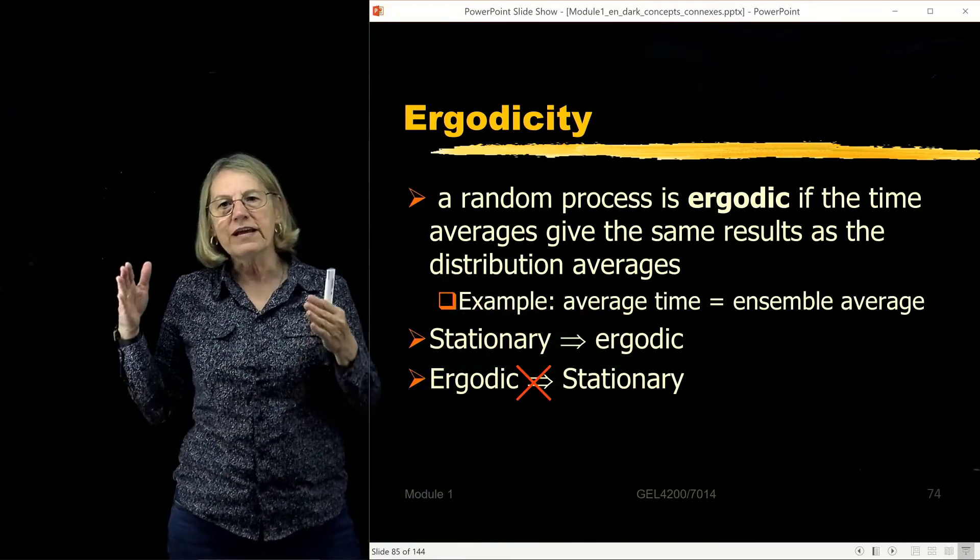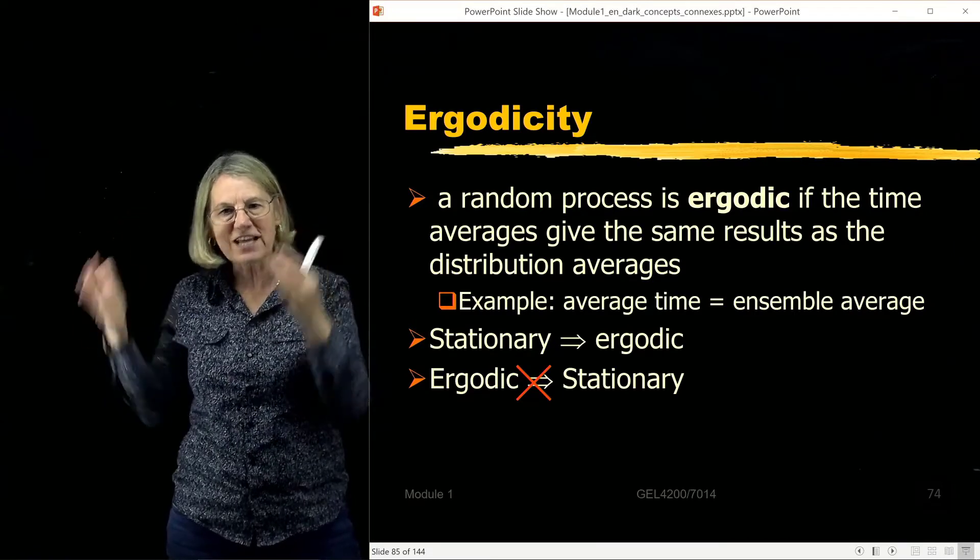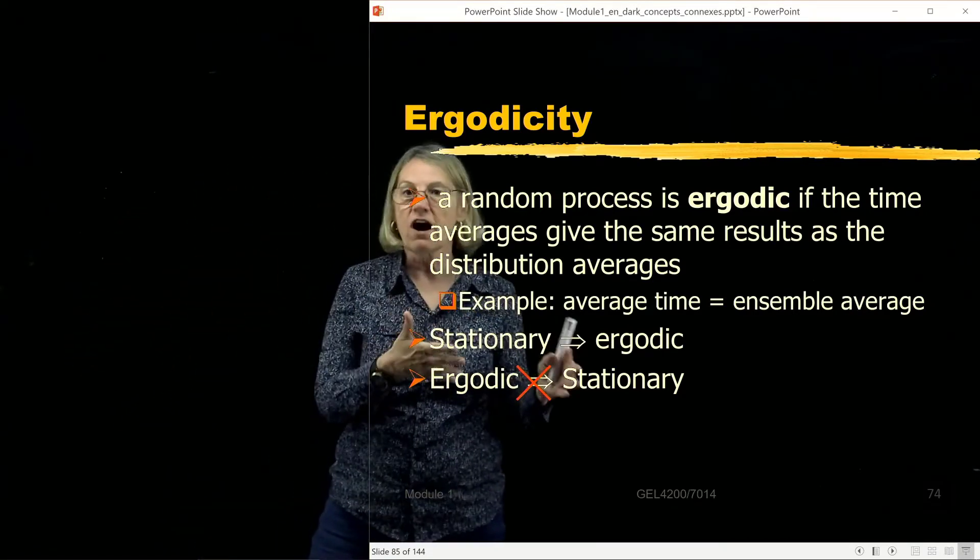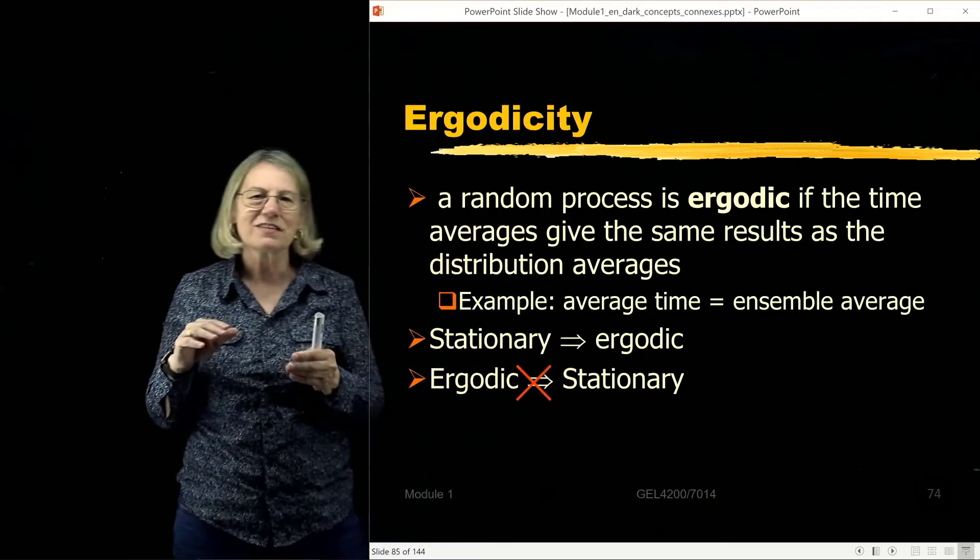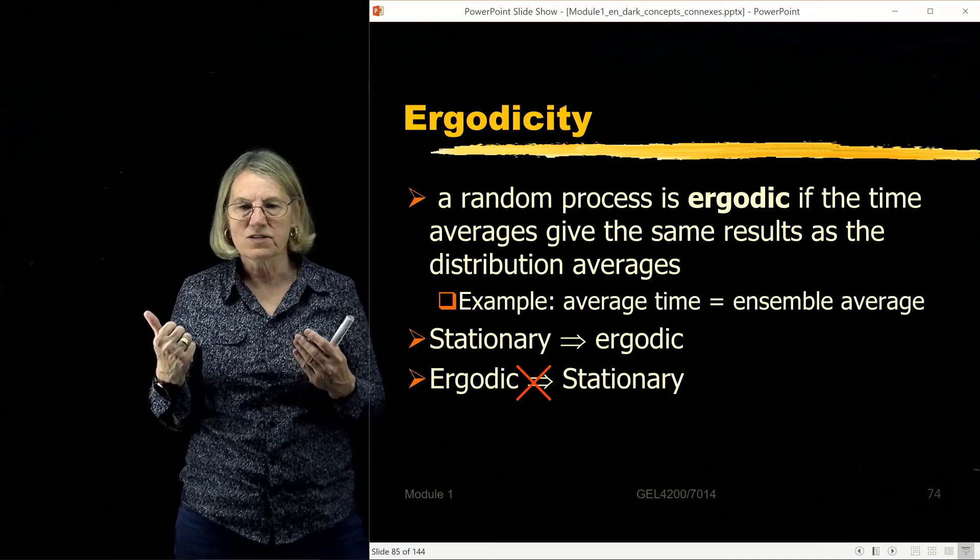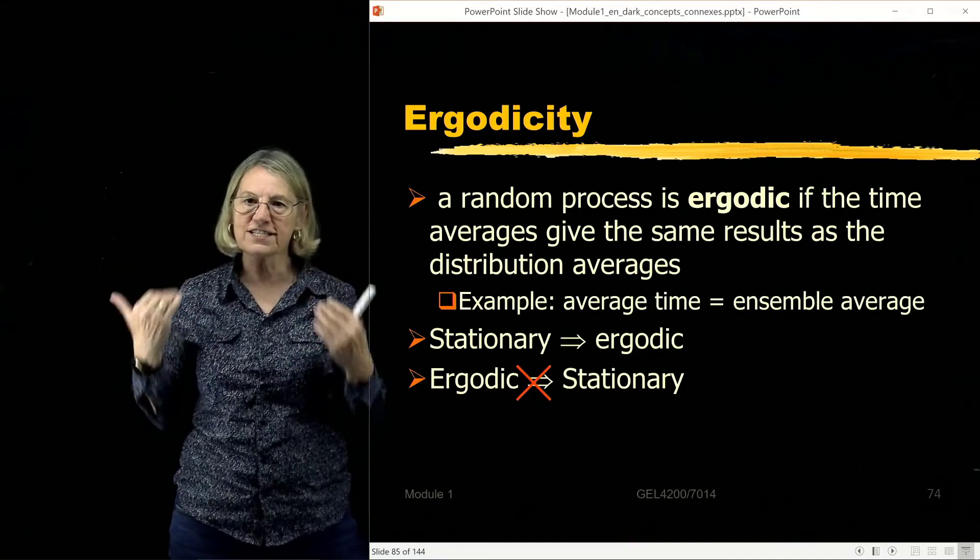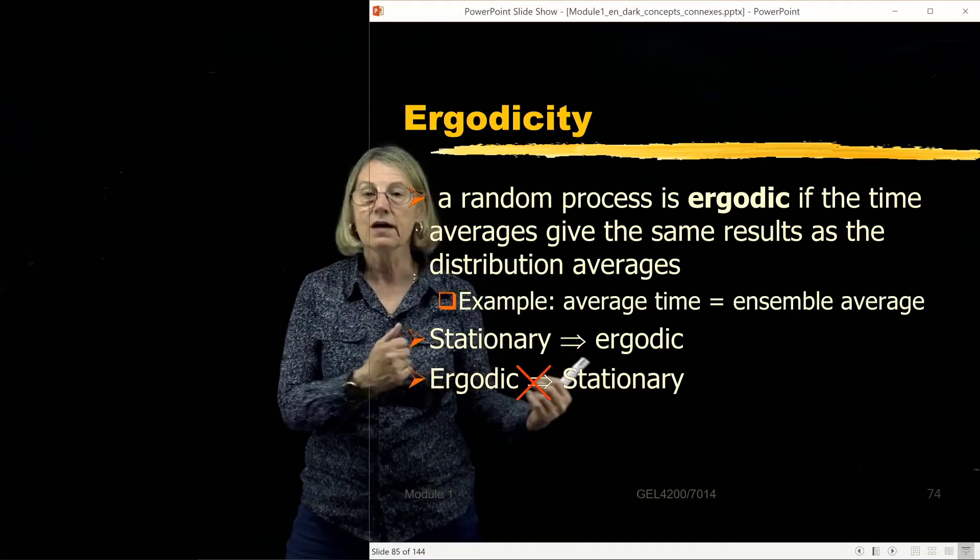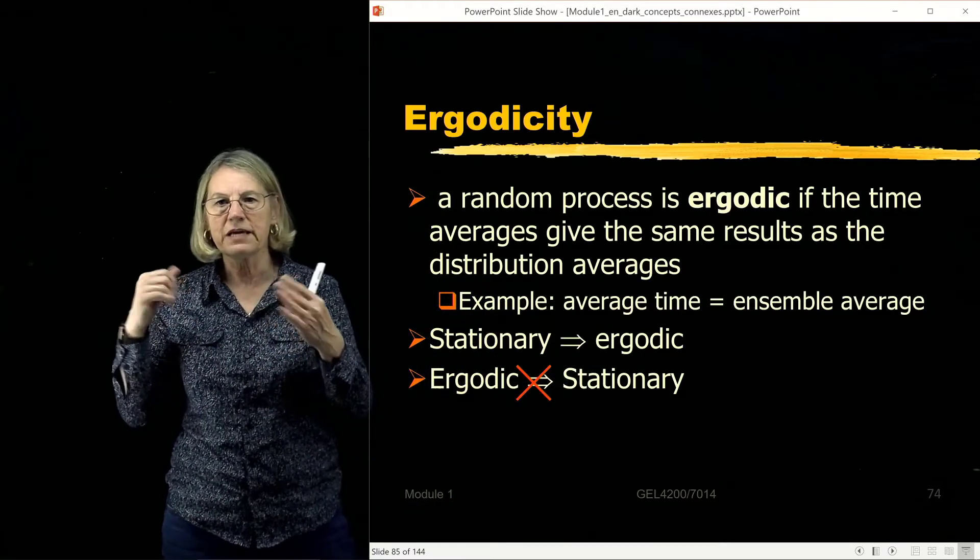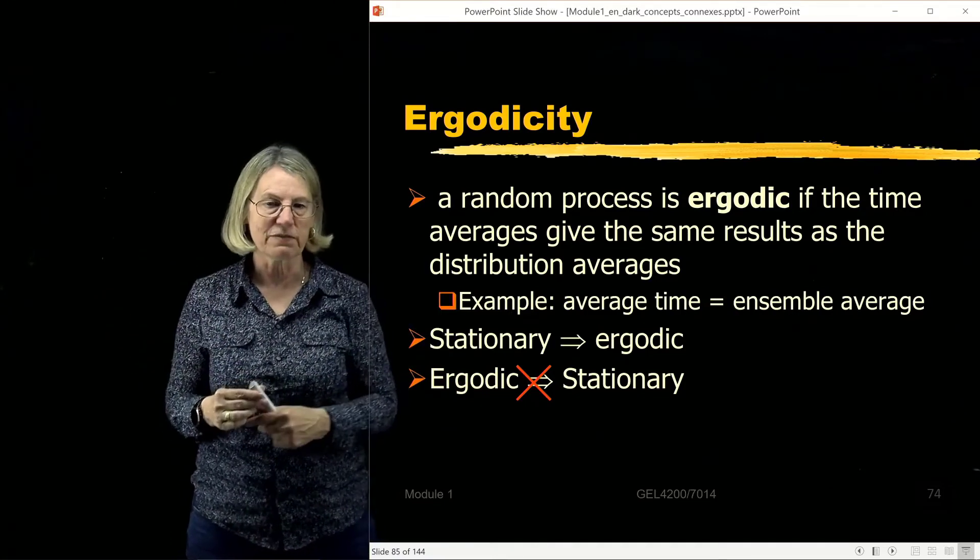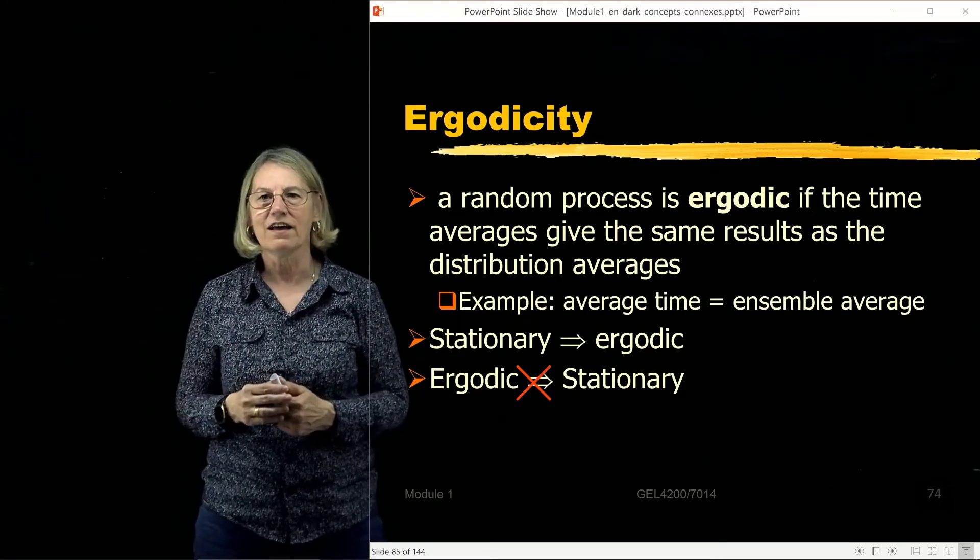So there is this idea of if we have a stationary process, a stationary process will be ergodic. But stationarity is stronger. Ergodicity is weaker. So if I have ergodicity, that does not necessarily mean that I have stationarity. So be careful in the use of these terms. However, I wanted to bring them both to your attention because you can often see them in the literature.